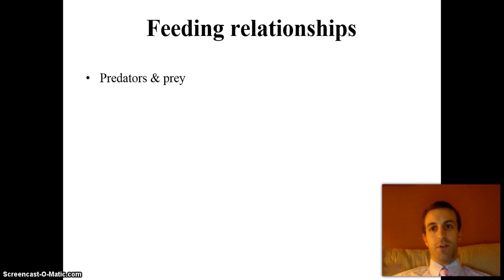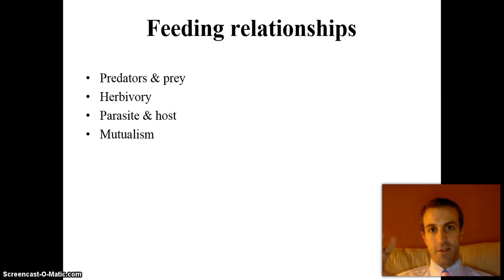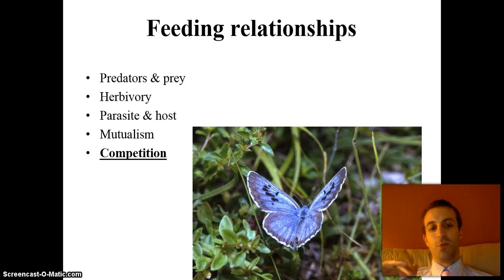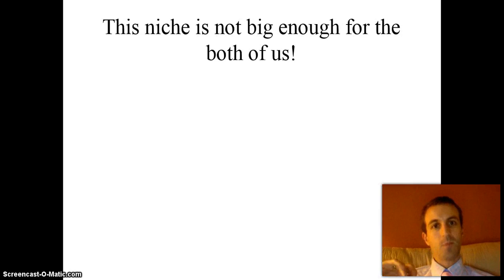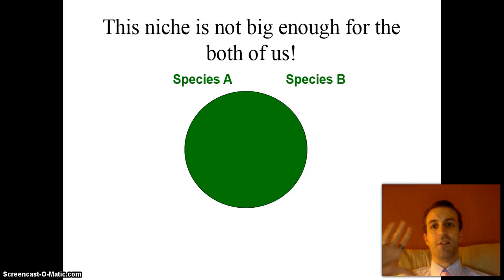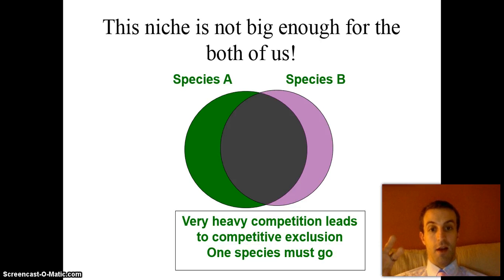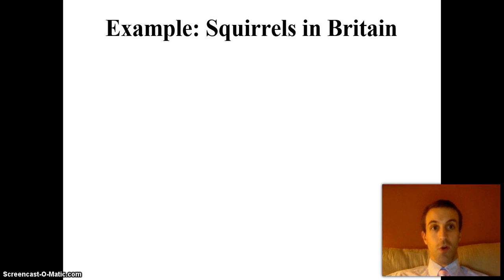Here's where competition comes in. We've talked about feeding relationships — predators and prey, herbivores, producers and consumers, parasites and hosts, mutual relationships — but what happens when two species want exactly the same thing? That's competition, and that's where nature gets particularly vicious. You will find very few niches big enough to sustain two kinds of species. If two species occupy the same niche, one of them is going to have to be driven off.